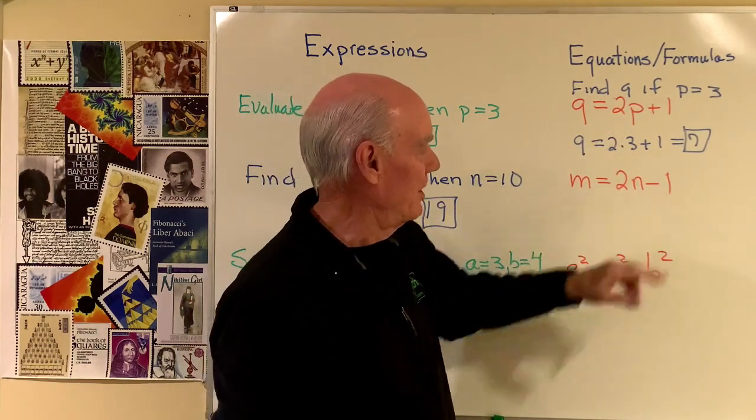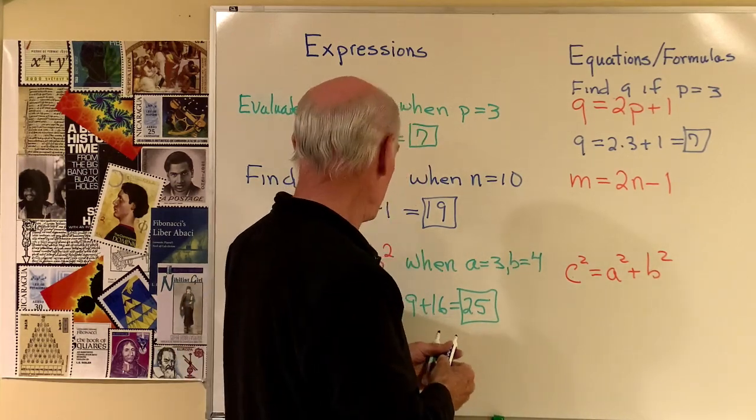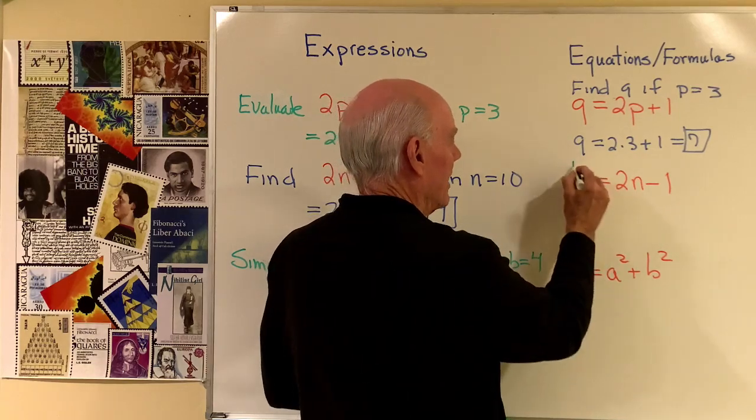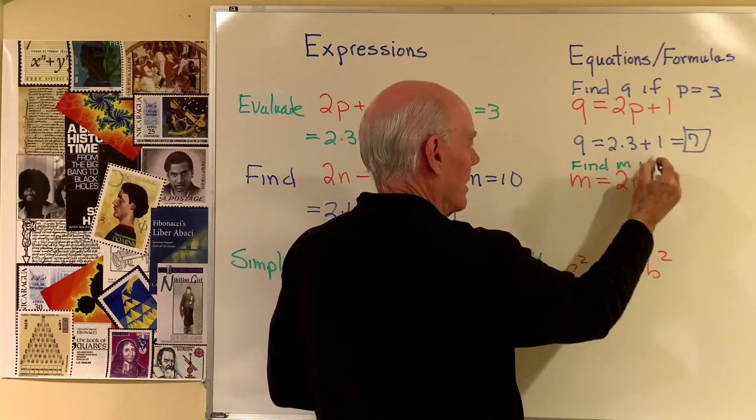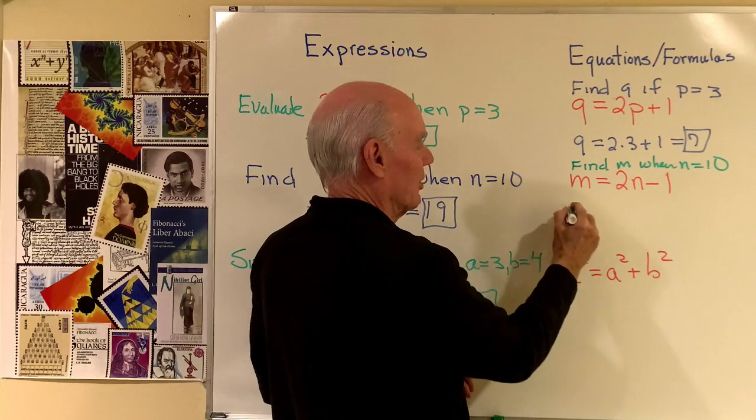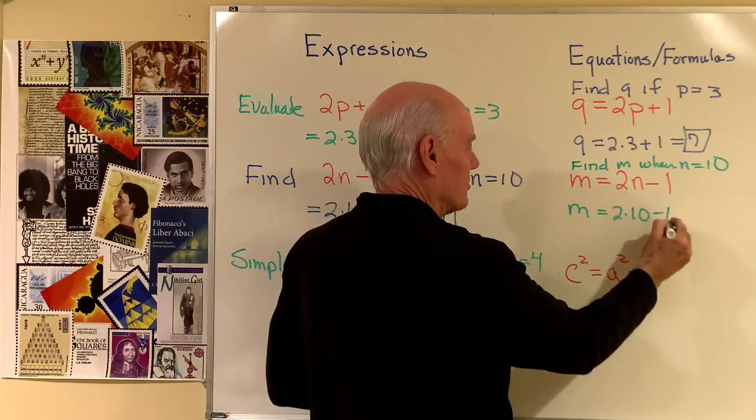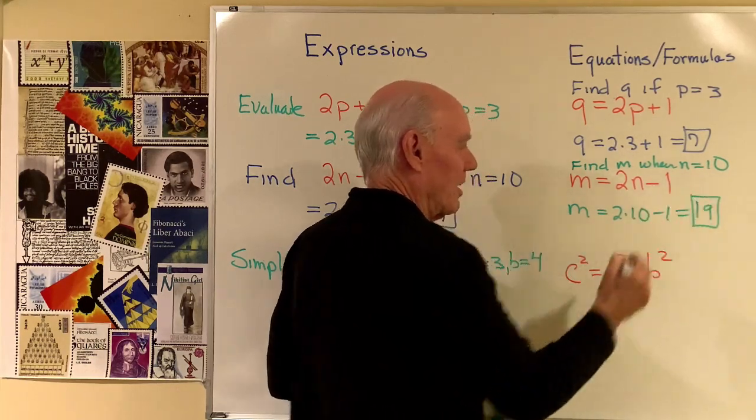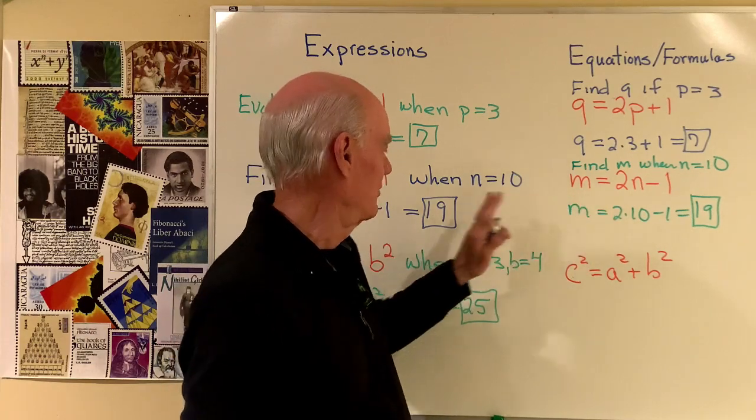How about M is equal to 2N minus 1? Let's make this find M when N is equal to 10. So M is going to be equal to 2 times 10 minus 1, again 20 minus 1, or 19. So same problem, just worded a little differently, and I've got this as a formula instead of just an expression.